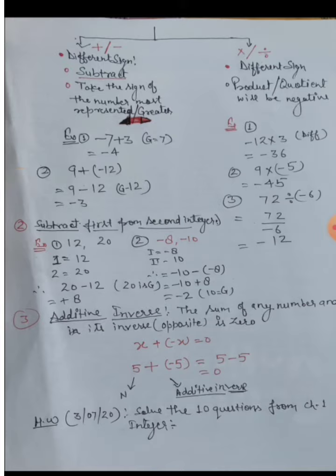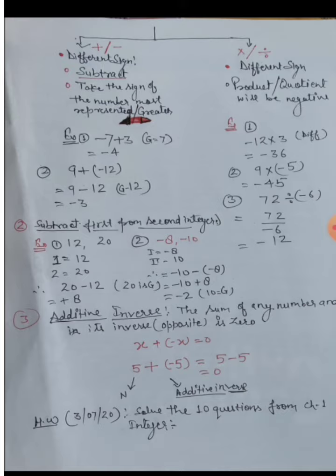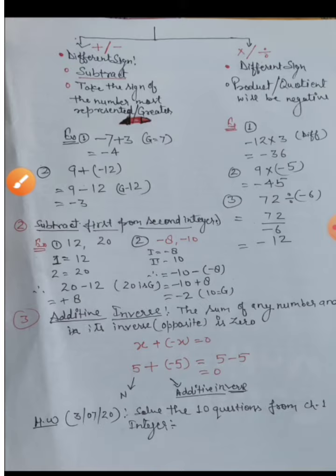For multiplication and division with different signs, the product or quotient will be negative. Example: minus 12 multiplied by 3 — different signs, answer is negative: minus 36. For division: 72 divided by minus 6, we write 72 upon minus 6. Different signs, so the answer is negative: minus 12.